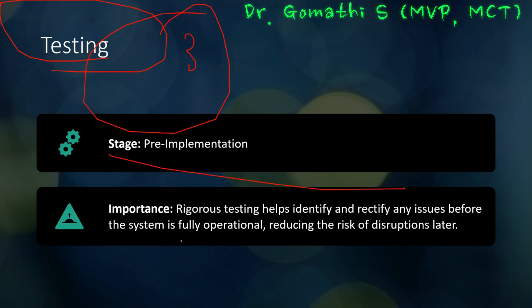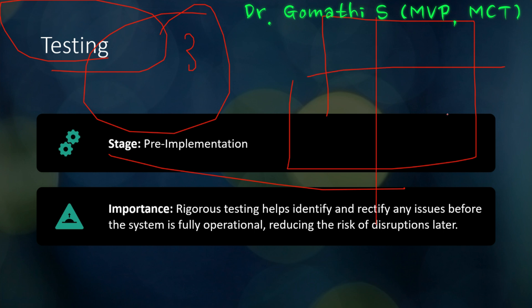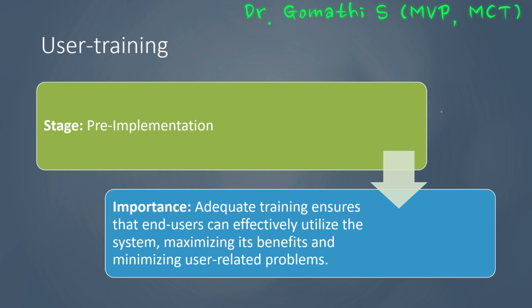The third phase is testing, a pre-implementation stage. Think of testing as a dress rehearsal before the grand performance — it's about identifying and addressing potential hiccups before they impact the show. Rigorous testing is crucial to identify discrepancies, inconsistencies, or flaws. We simulate real-world scenarios from routine operations to edge cases and monitor how the system responds. By validating functionality through comprehensive testing, we significantly reduce the risk of disruptions and ensure a smoother transition to the new system.